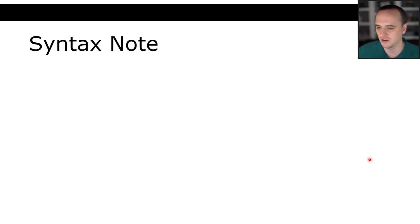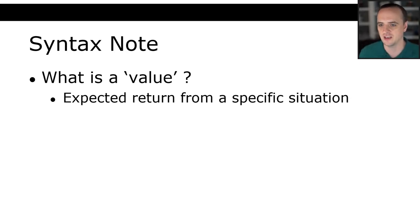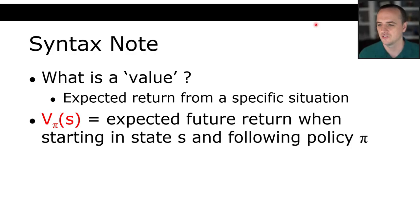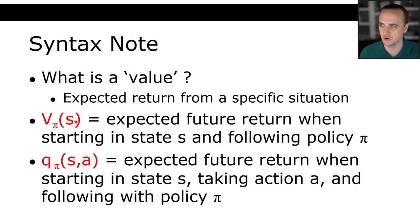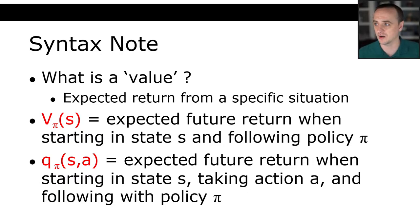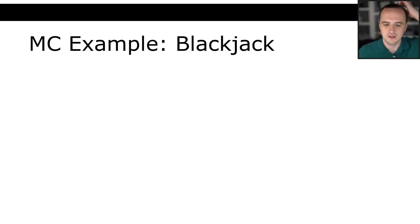A quick note on syntax. A value is an expected return from a specific situation. V-pi of S is the value of a state given a policy — the expected future return when starting in state S and following policy pi. Q is the action value — the expected future return when starting in state S, taking action A, and then following policy pi. Q is what we're more interested in because we want to know what is the best action to take at a state, not just how much we want to be in that state.